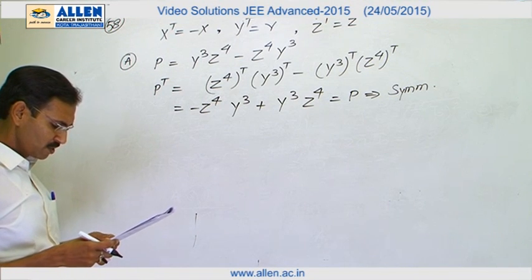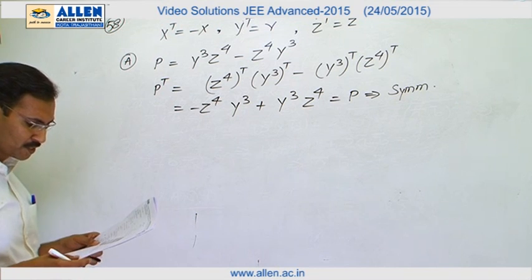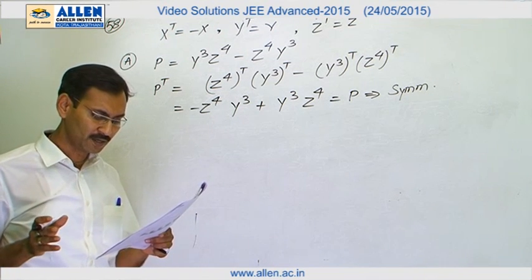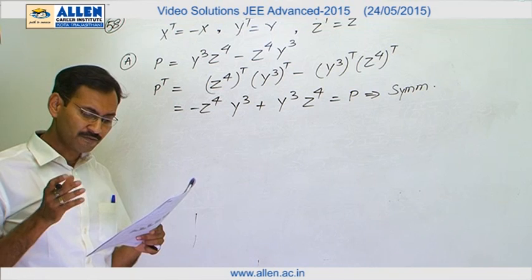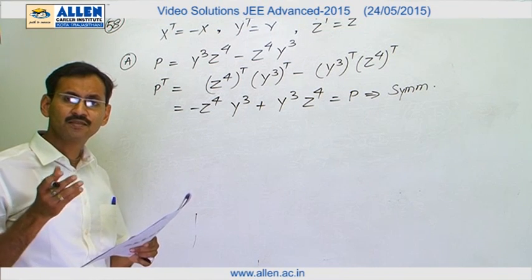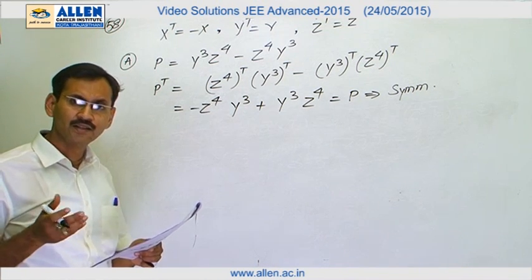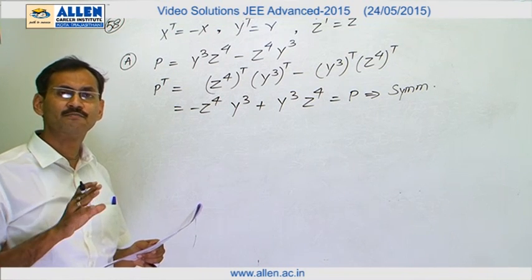Now, option B. Option B is having two matrices both are of even power. And we know that if X or Y, whether they are symmetric or skew symmetric, if their powers are even,